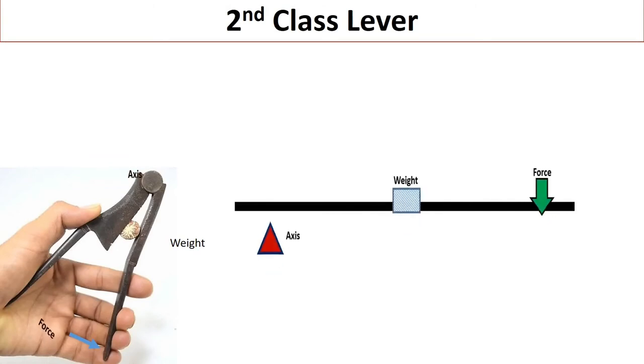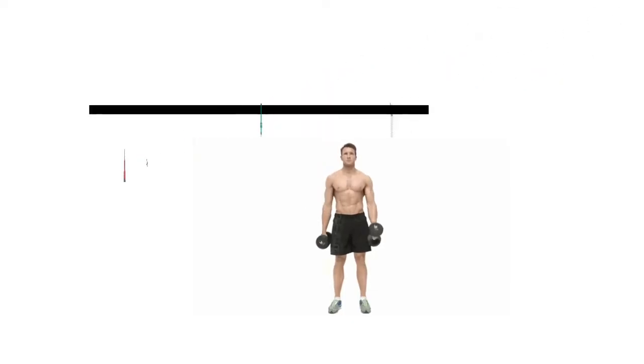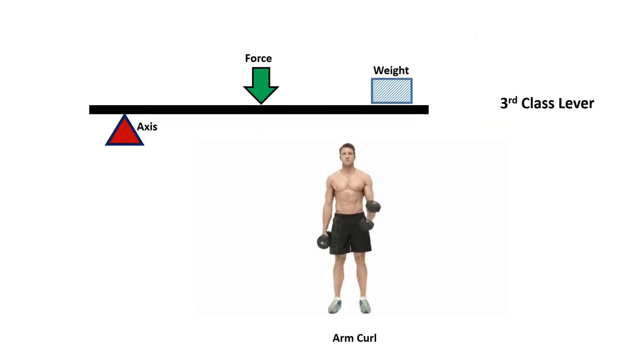In the second class lever, the weight is always in the middle. For example, nut cutter. In third class lever, the force is always in the middle. For example, arm curl.